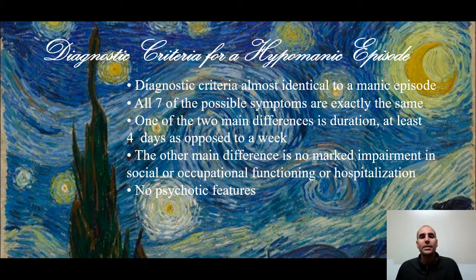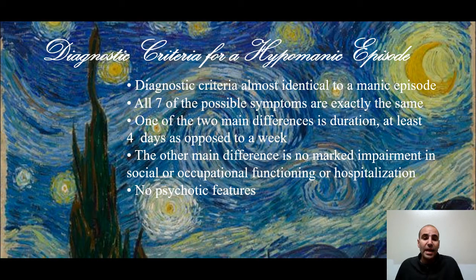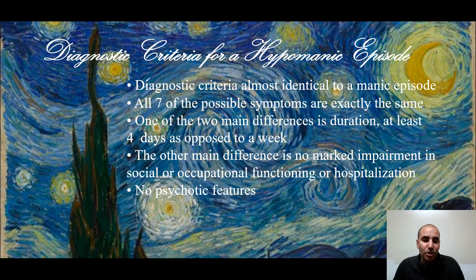The hypomanic episode criteria are identical to a manic episode — all seven symptoms are the same. The only two differences are duration and severity. Duration is shorter: four days as opposed to one week. The other main difference: no marked impairment in social or occupational functioning, no hospitalization required, and no psychotic features. Any combination is possible — impairment in occupational functioning with psychotic features, or hospitalization with self-harm that occurs privately.